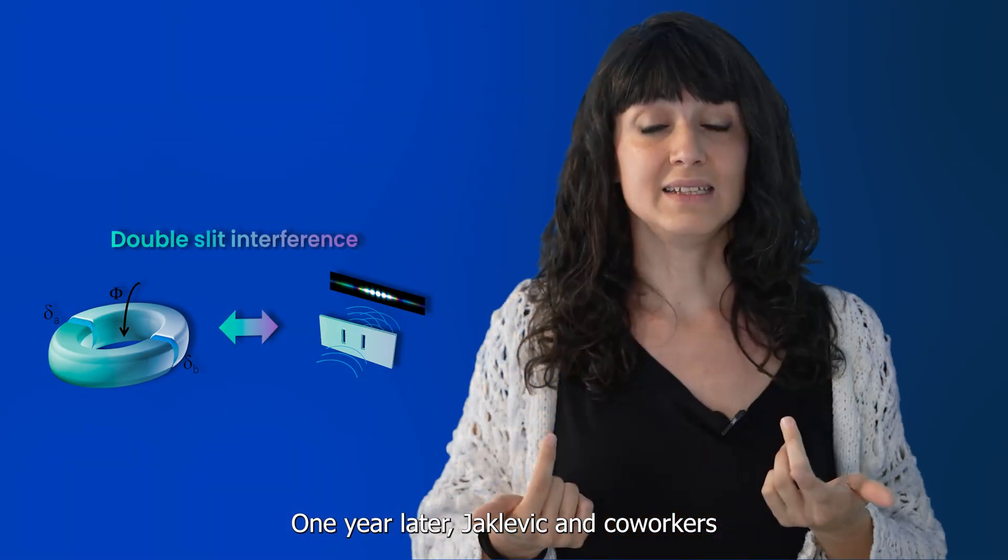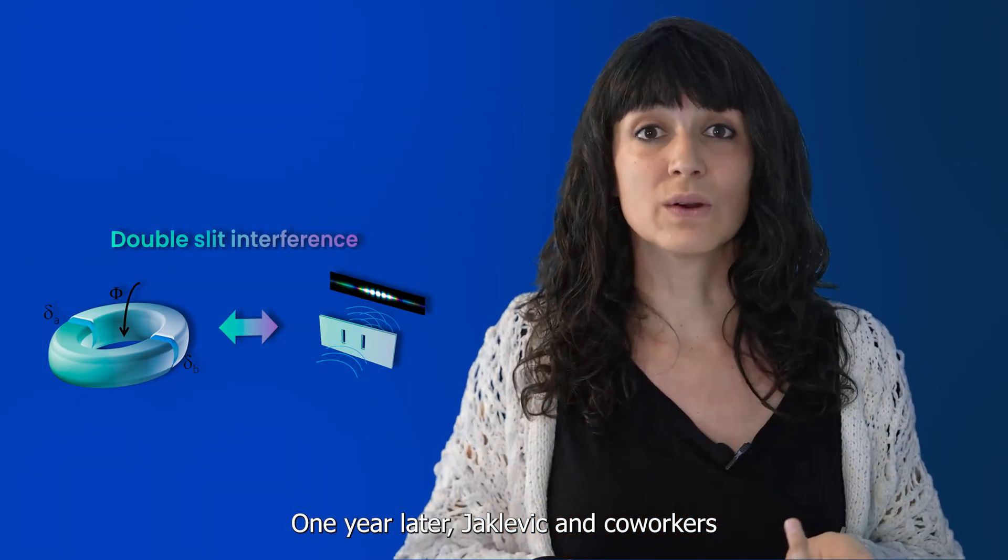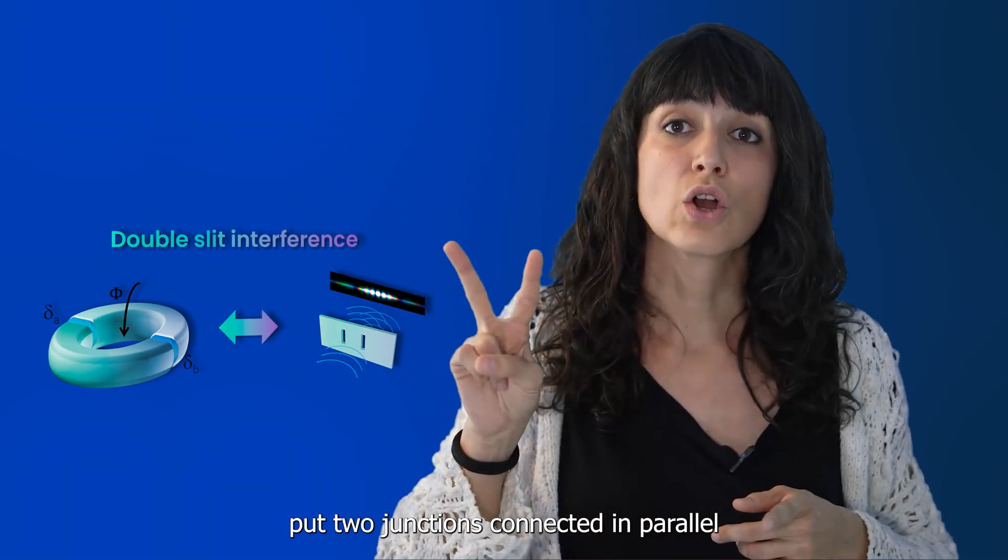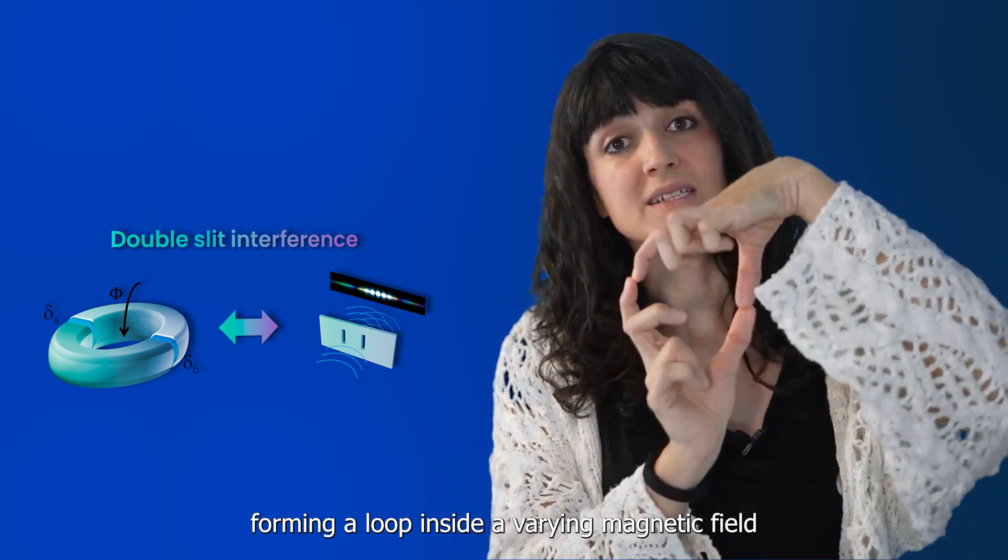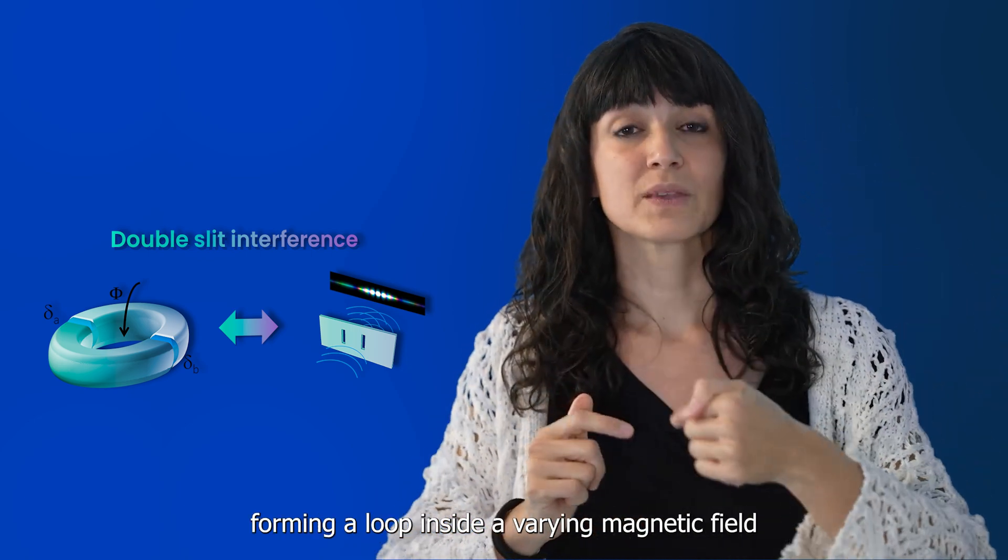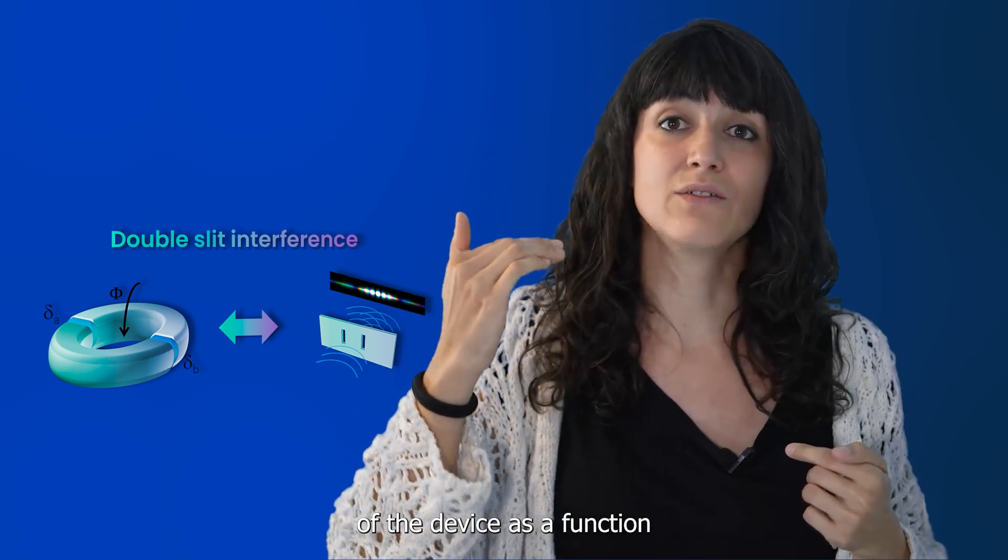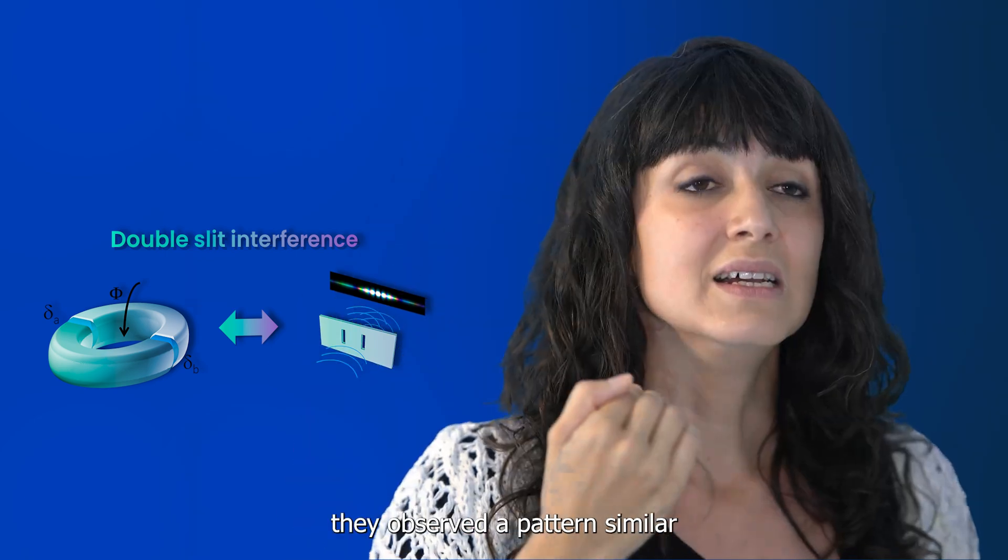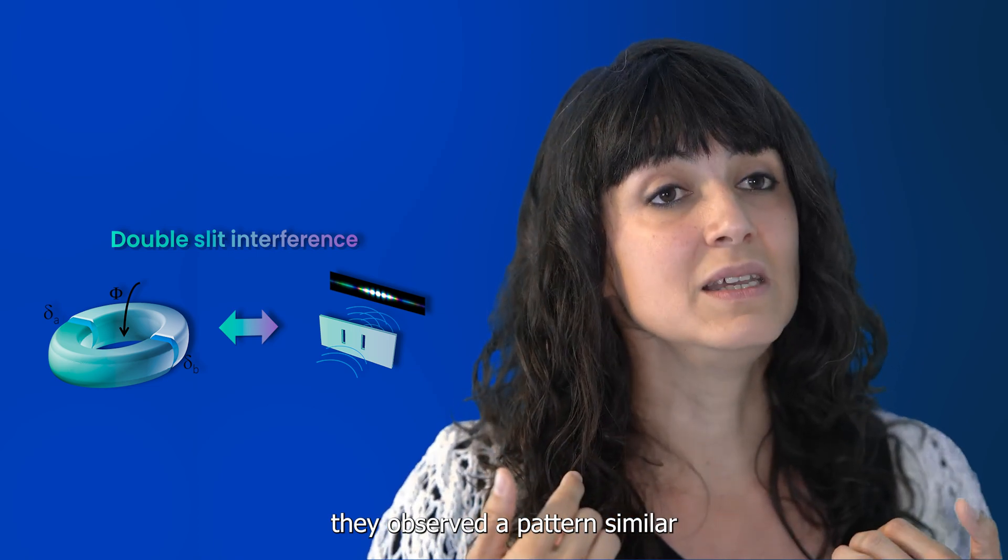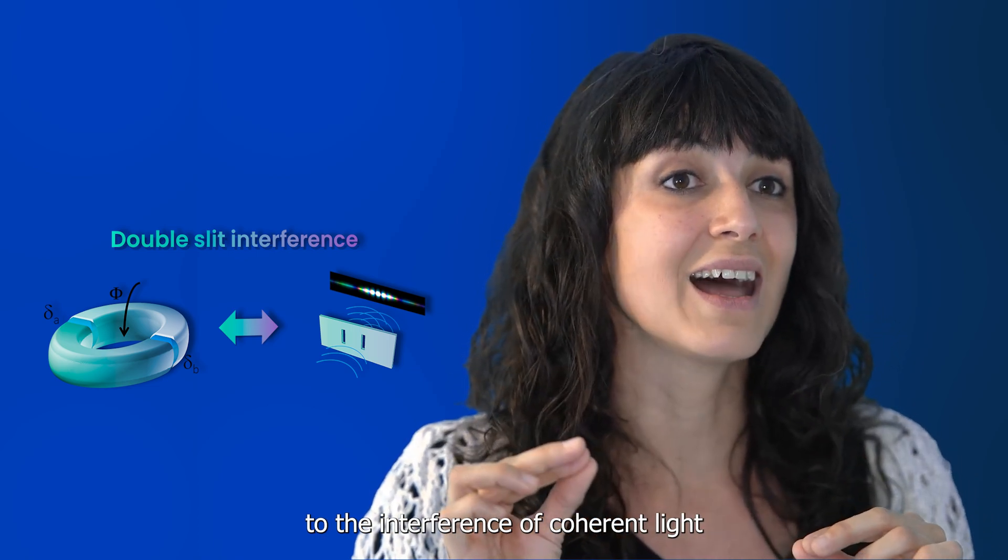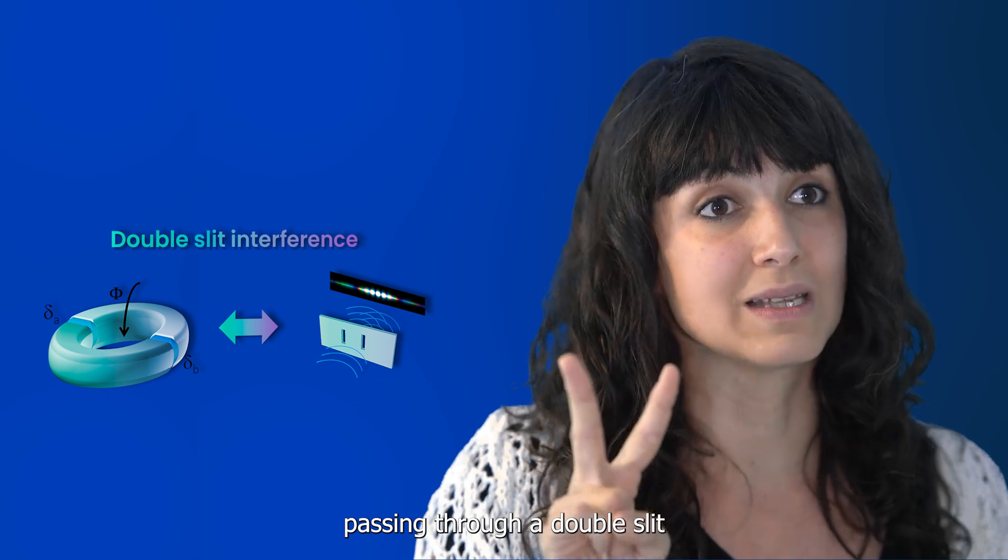One year later, Jaklevic and co-workers put two junctions connected in parallel, forming a loop inside a varying magnetic field. By measuring the maximum critical current of the device as a function of the external field, they observed a pattern similar to the interference of coherent light passing through a double slit.